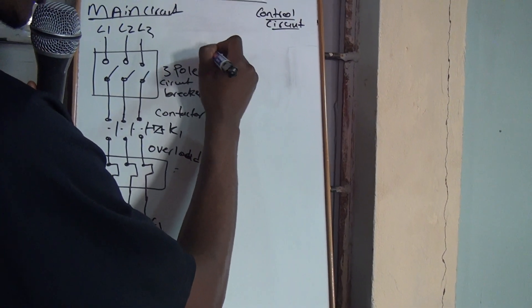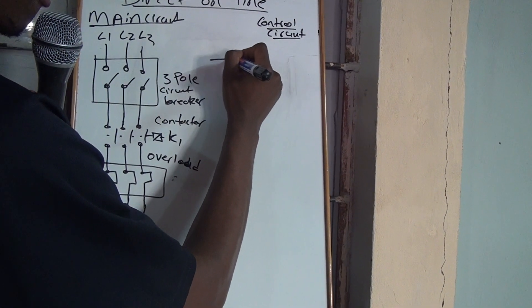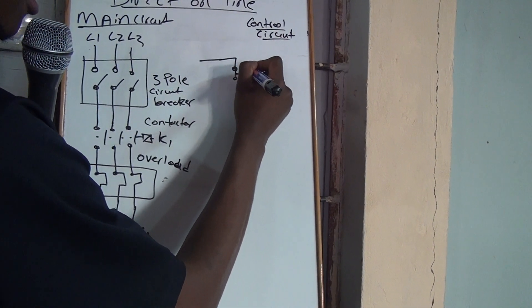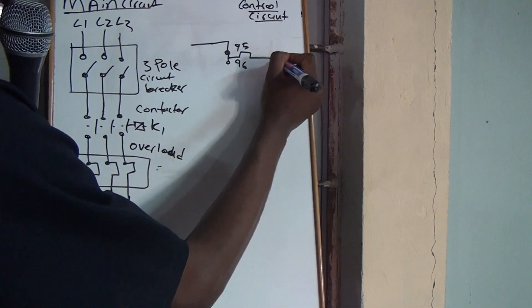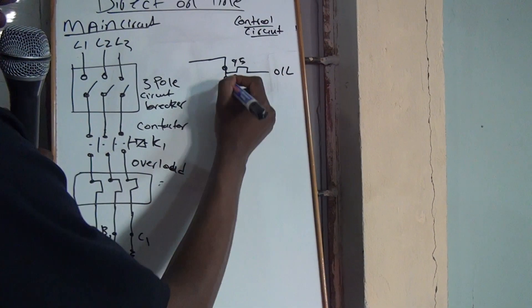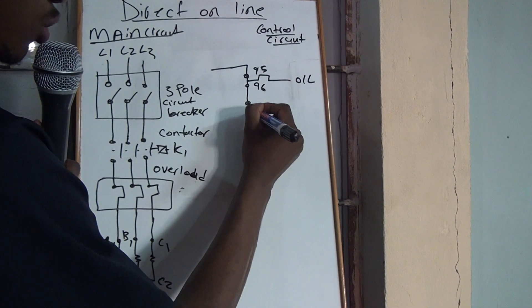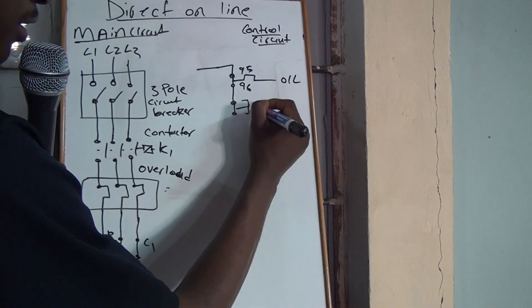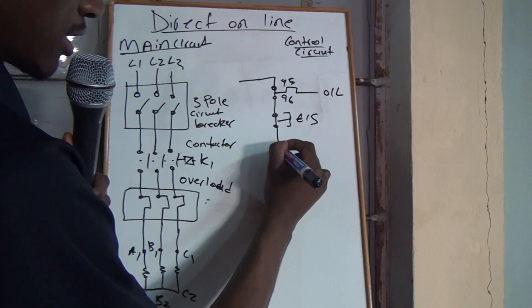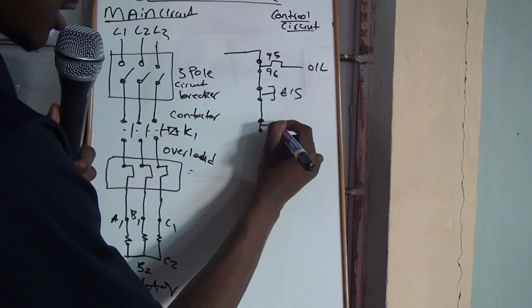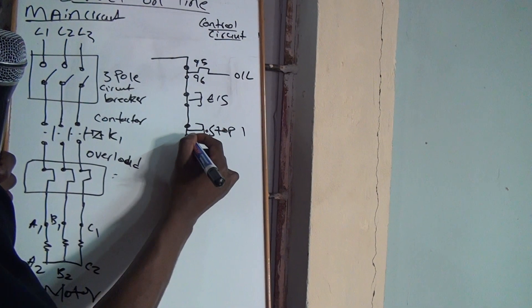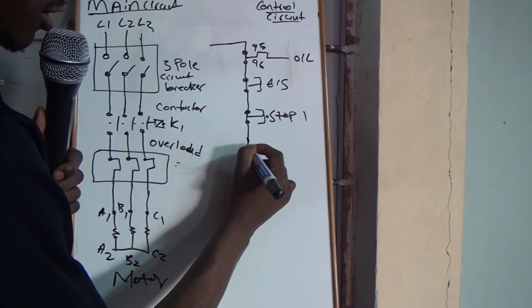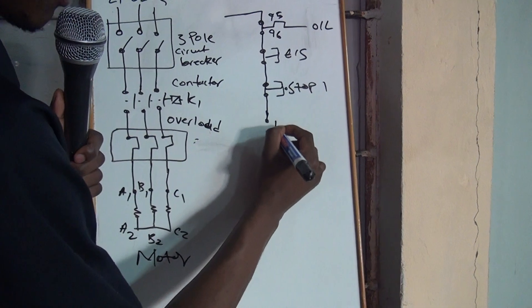And on your control circuit, we will have the 95 and 96 of the overload. And then, you'll have your emergency stop button, ES. And then, you have your stop button, stop one or stop button. And then, you'll have your start button.